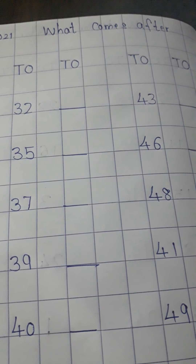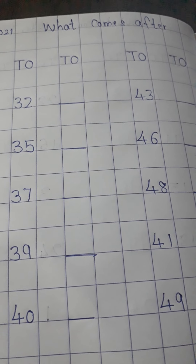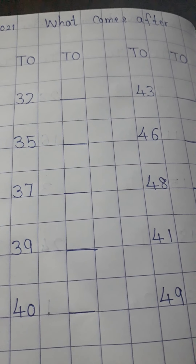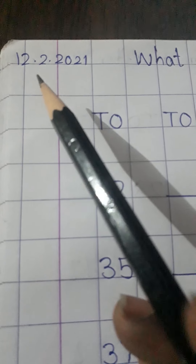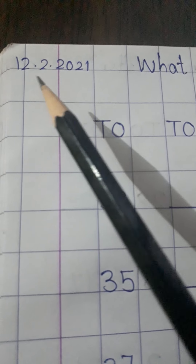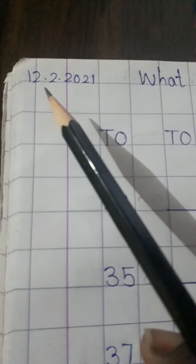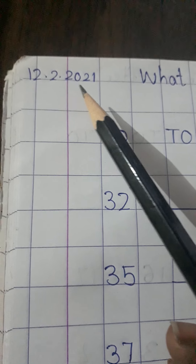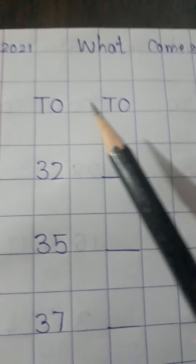Good morning students, hope you all are doing well. Open your maths notebook. Today we'll be doing 'what comes after.' The date today is 12th of February 2021 — 12.2.2021. Write the date this way, in tens and ones.